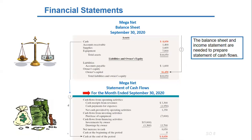It's for a period of time, and it's based on cash receipts that we have to add, and cash payments that we have to deduct, in order to arrive at a final balance of cash that is the same as the one appearing in the balance sheet.